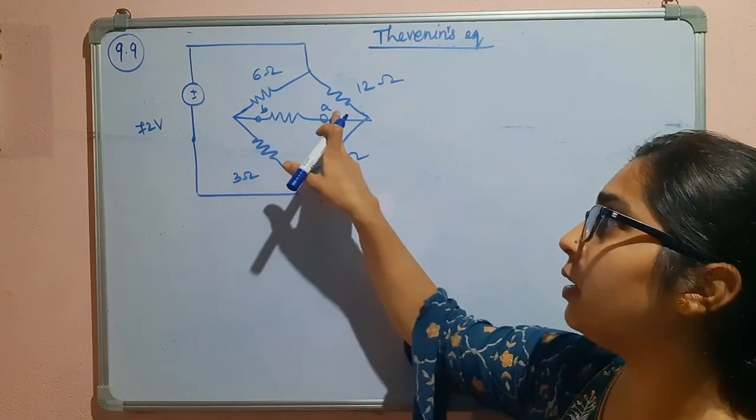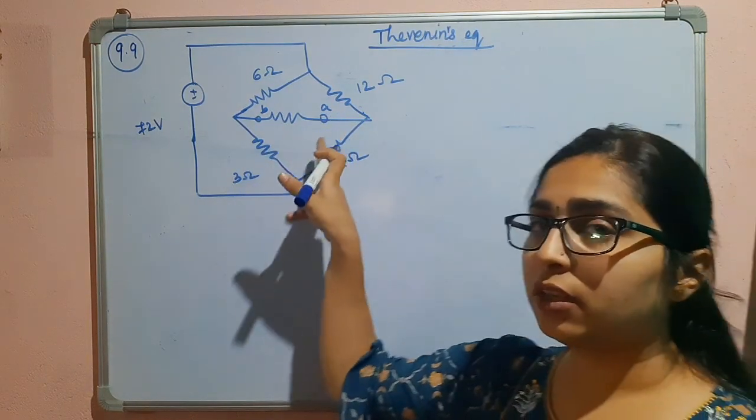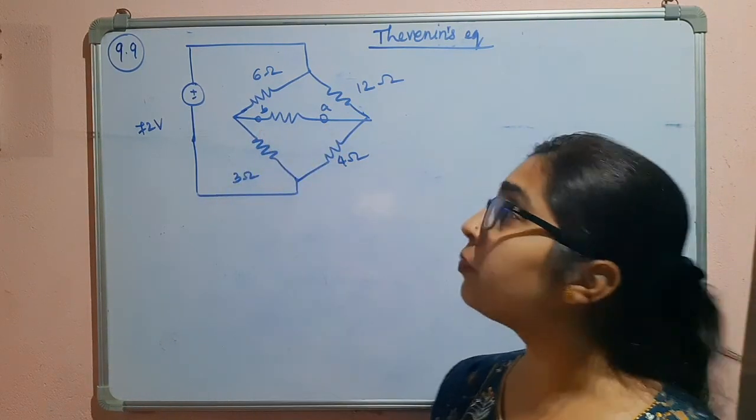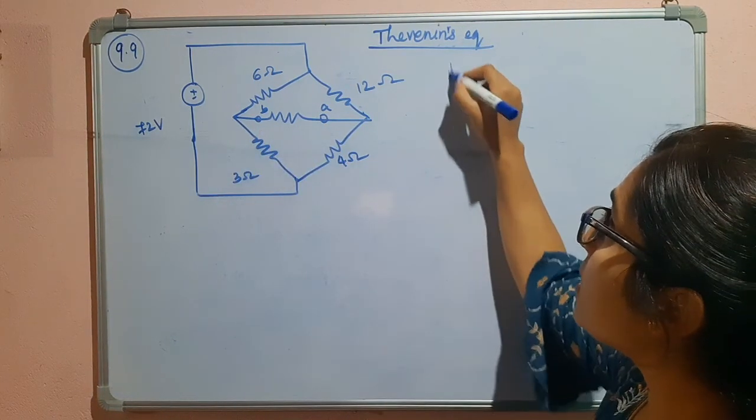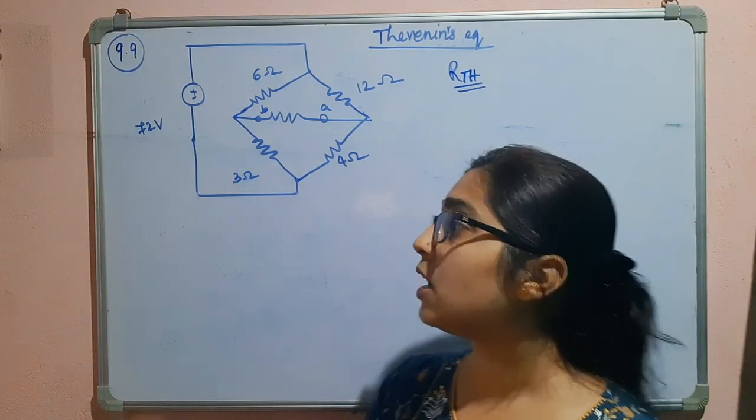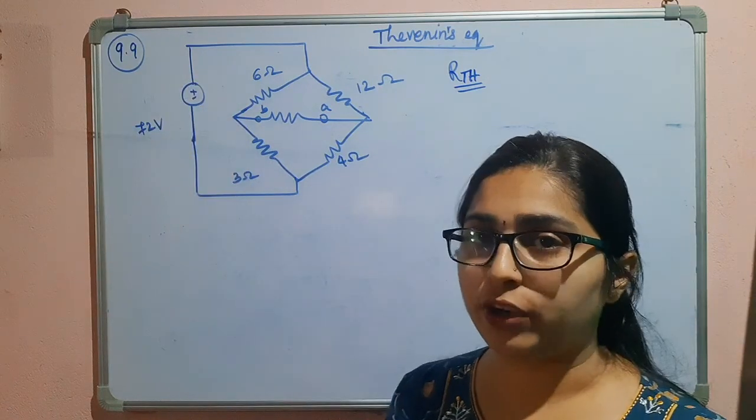The terminals given here, remember that you have to note the terminals properly. So here it is A, here it is B. To find RTH this becomes easy because it involves only independent sources. That means now the voltage source will be shorted.